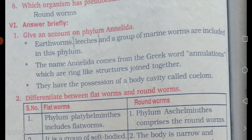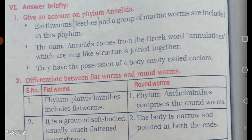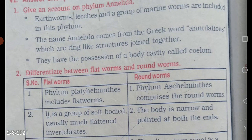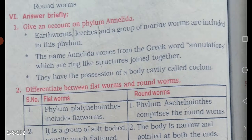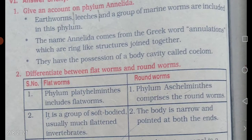A four-mark question: give an account on phylum annelida. Earthworms, leeches and a group of marine worms are included in this phylum. The name annelida comes from the Greek word annulations, meaning ring-like structures joined together. They possess a body cavity called coelom.